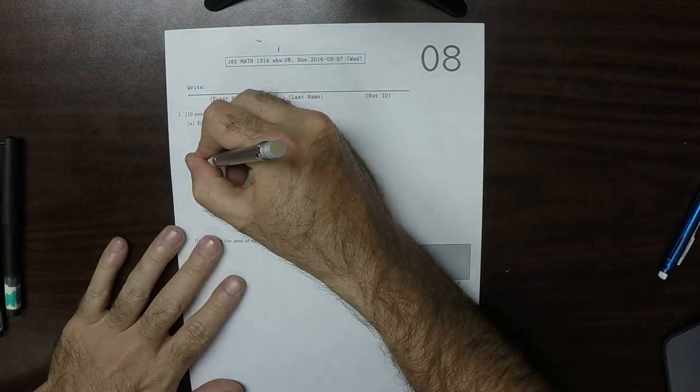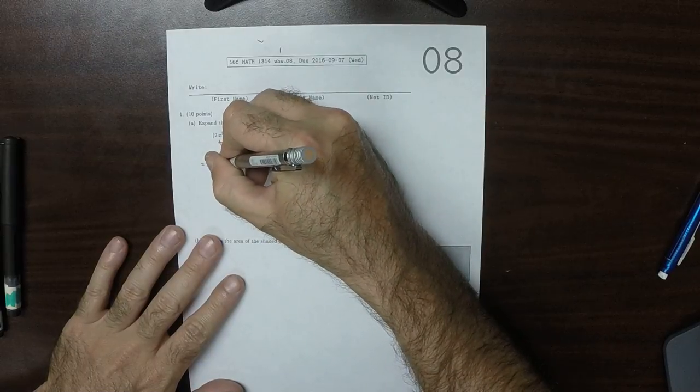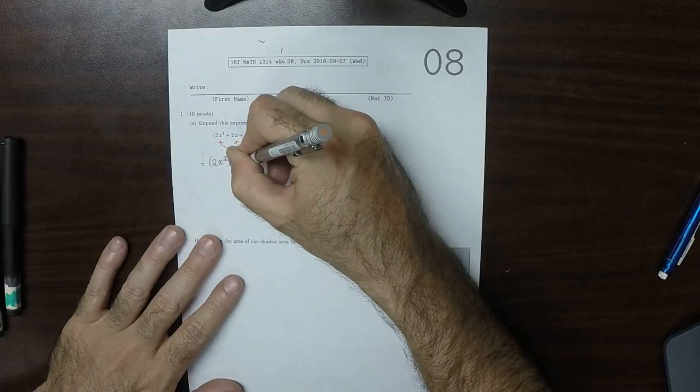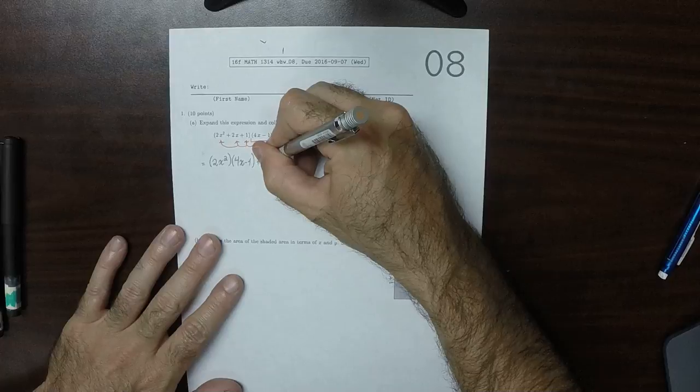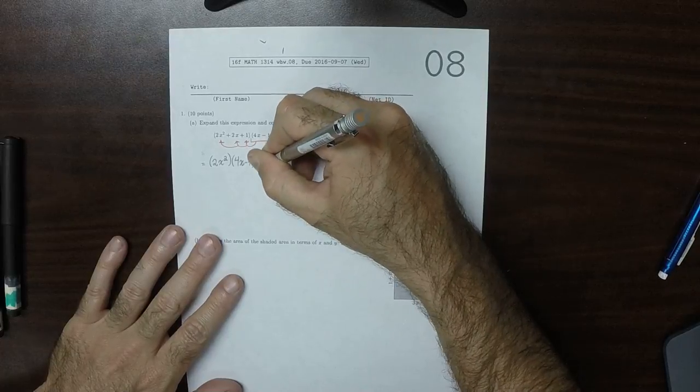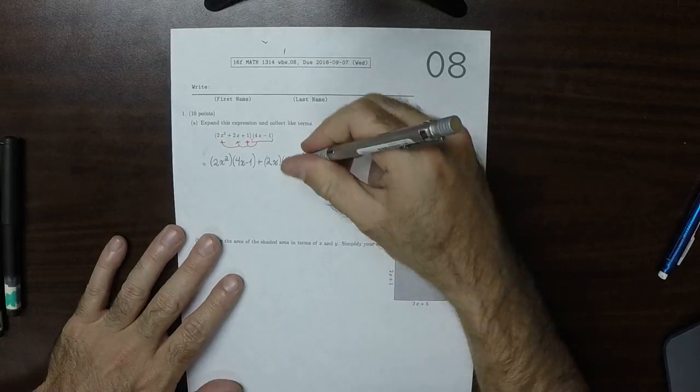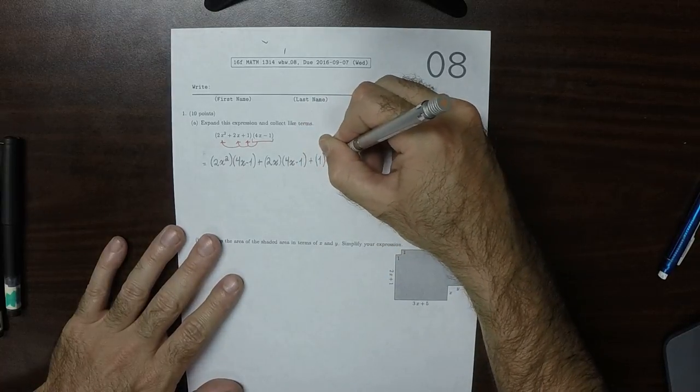So then forming that distribution, it'll be 2x squared times 4x minus 1 plus 2x times 4x minus 1, and then plus 1 times 4x minus 1.